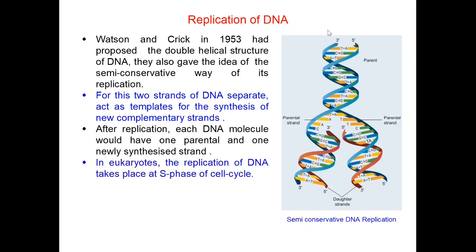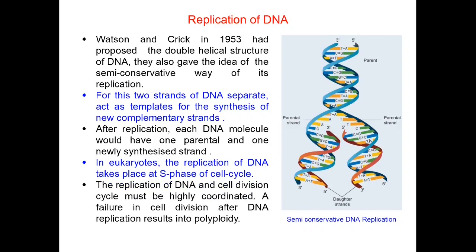In eukaryotes, the replication of DNA takes place in the synthetic phase or S phase of the cell cycle. Replication of DNA and the cell division cycle must be highly coordinated, as failure in cell division after DNA replication results in polyploidy, a type of mutation.